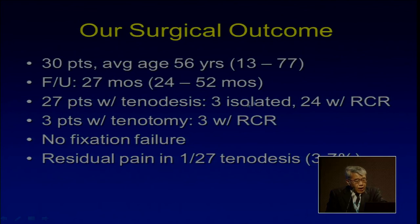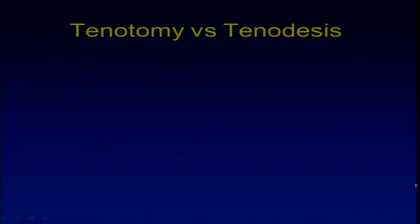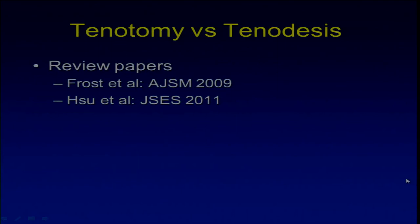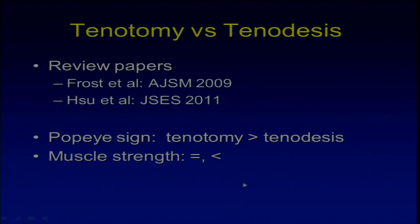Our surgical outcomes: 30 patients, 27 months follow-up, 27 underwent tenodesis and 3 tenotomy. No fixation failure so far, and residual pain was observed in one out of 27 tenodesis cases — just under 4%. Two review papers in the literature conclude that Popeye's sign is worse in the tenotomy group, and muscle strength is almost equal or slightly better in the tenodesis group, but we really don't know which is better.